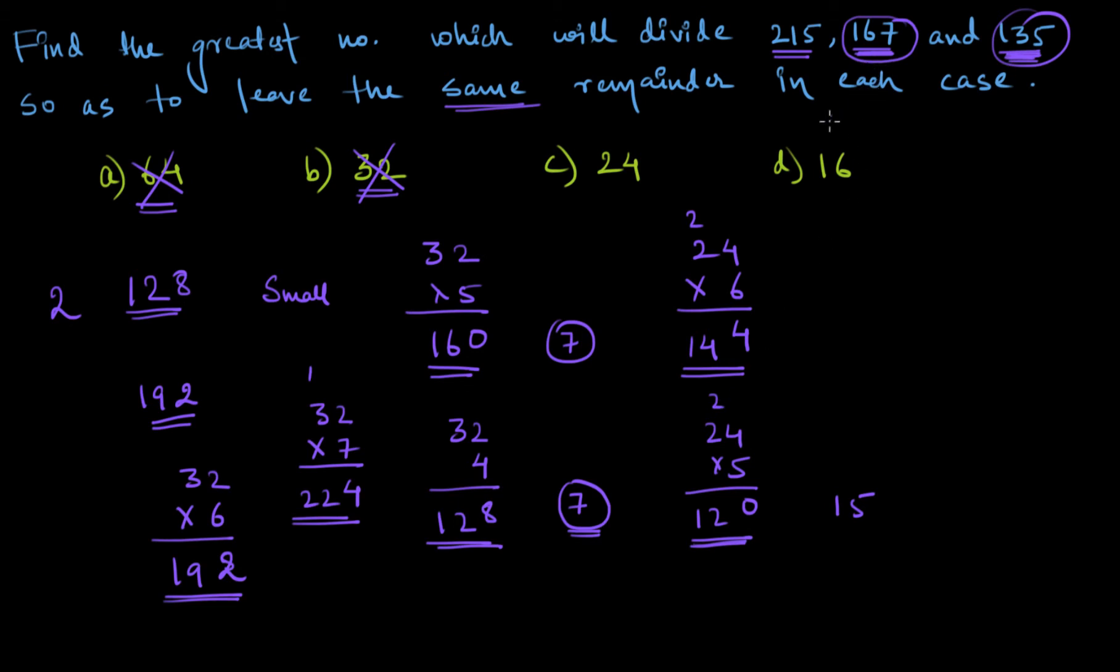And in case of 167, let us multiply 24 with 7. 7×4=28, 2 carry, 7×2=14, 15, 16, 168. So I cannot multiply this by 7 in order to divide 167 by 24. I have to multiply 24 by 6. So in this case, the remainder will be 167 minus 144, which will give me 23, not equal to 15. Hence, 24 will also not be my option.